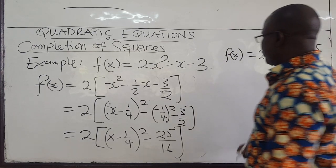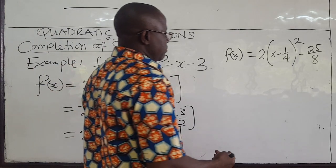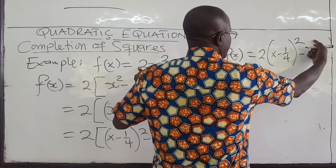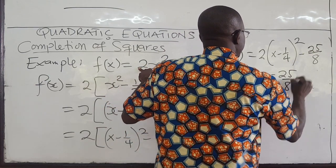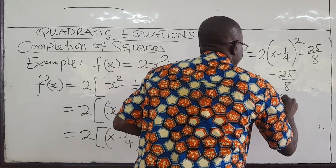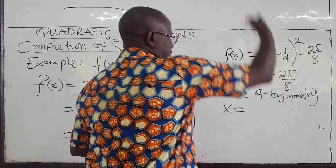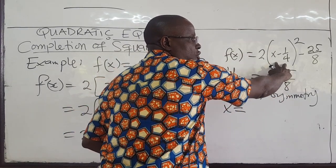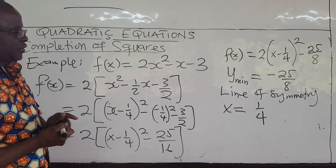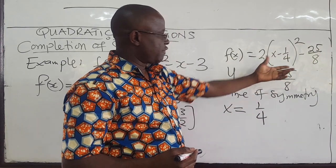We get a minimum, as expected, because a is positive. The minimum value y-min equals negative 25 over 8. And the line of symmetry — the x value where the minimum occurs — is found by setting x minus 1 over 4 equal to zero, giving x equals 1 over 4. That is how you complete the square and pull out information from the quadratic function.